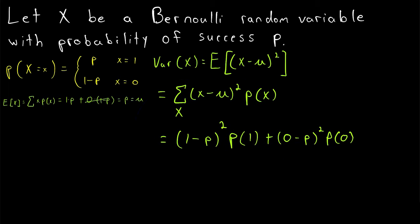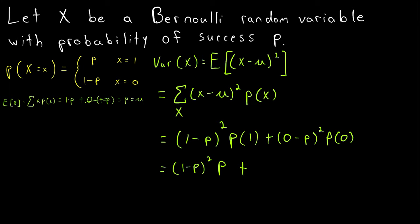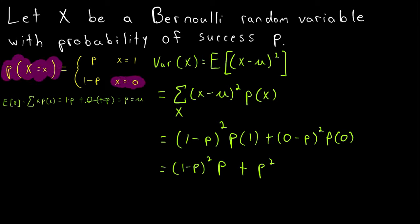We can now substitute the probabilities. The first term is (1 minus p) squared multiplied by P(1). Looking at our probability mass function, P(x = 1) = p, so we substitute p. The second term is (0 minus p) squared, which equals p squared, multiplied by P(0). From the probability mass function, P(x = 0) equals 1 minus p, so we substitute 1 minus p.